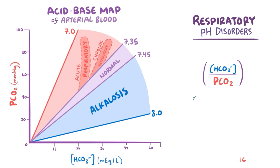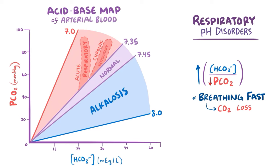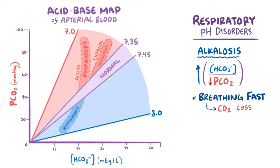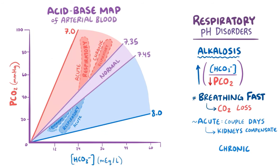On the flip side, if a person is breathing faster than normal, there's excessive carbon dioxide loss, so pCO2 decreases and pH rises. On the map, this shifts us into the area of respiratory alkalosis, where pH is much higher than 7.45 and pCO2 has dropped below 35 mmHg. There's again an acute phase, but over several days the chronic phase kicks in, and the kidneys start to excrete more bicarbonate, which decreases below 22 mEq/L, pulling the pH closer to the normal range.